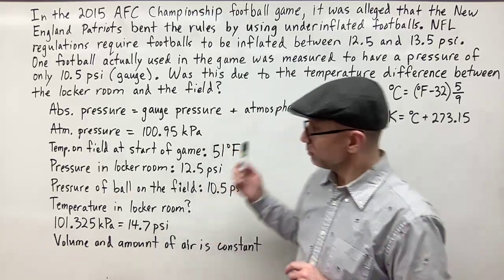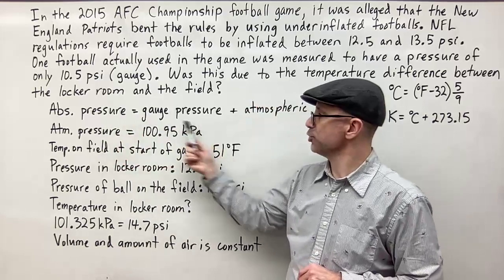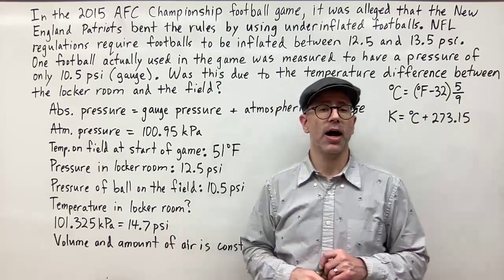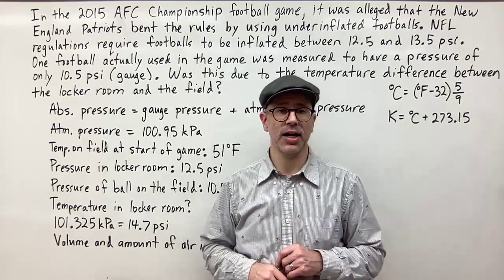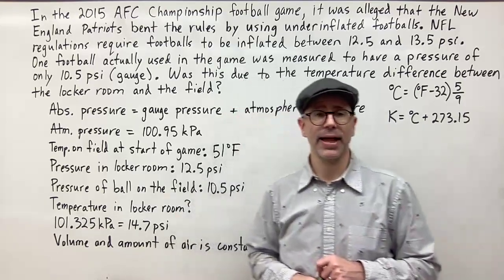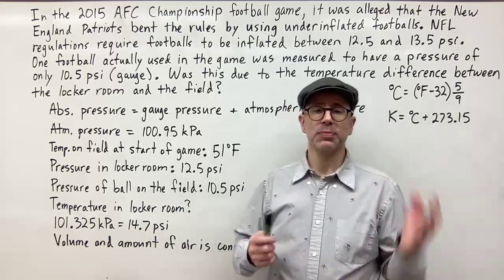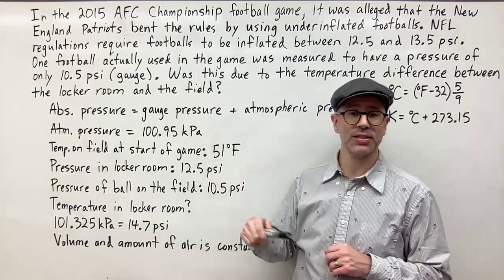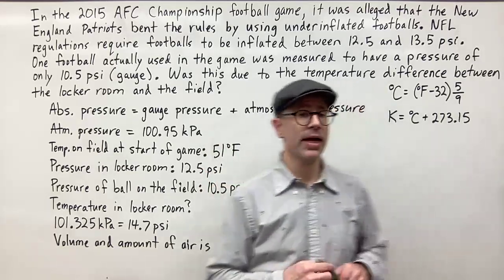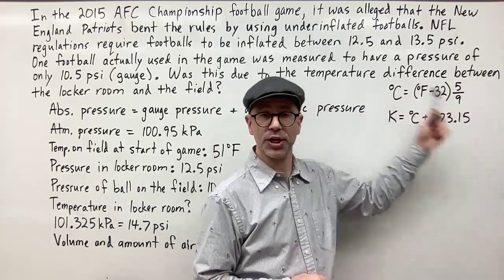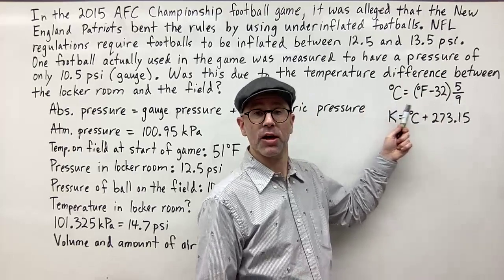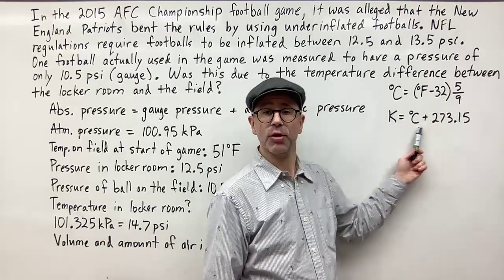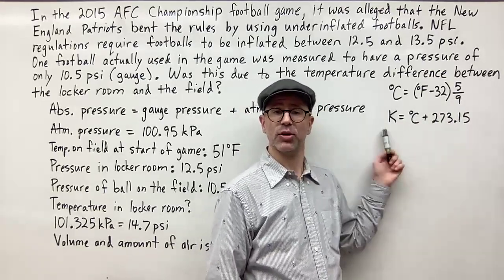That is different from the absolute pressure. The absolute pressure includes the atmospheric pressure plus the gauge pressure. So when we're given the PSI values — the 10.5, 12.5, and 13.5 — those are gauge pressures. We want to convert those into absolute pressure so we can look at the change in pressure and compare it to the temperature change. Since temperature is given in Fahrenheit, we'll need to convert to Celsius and then to Kelvin.